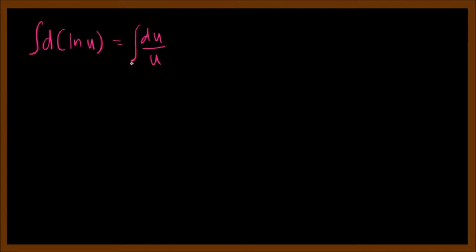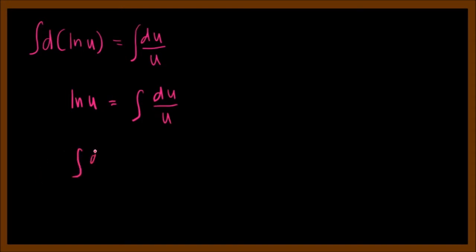Now if we are going to integrate both sides — we are doing indefinite integration — so we have here d of this one, which will be integrated as ln(u), because we know that the reverse of differentiation or anti-differentiation is integration. So we have that, and this will become the integral of du over u. We could say that the integral of du over u is equal to ln(u) plus C.